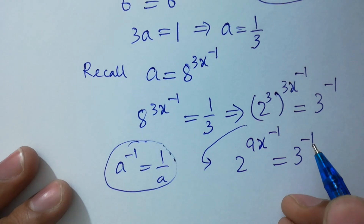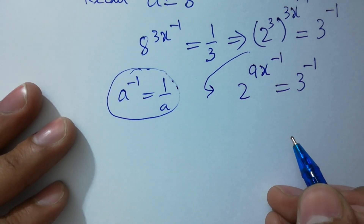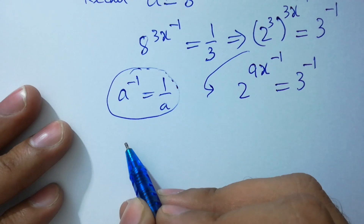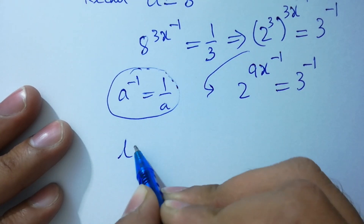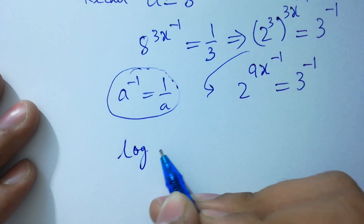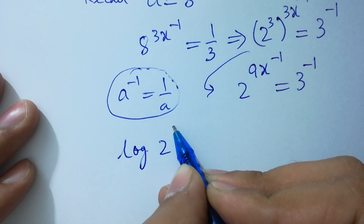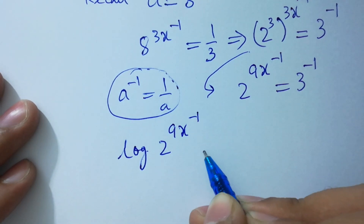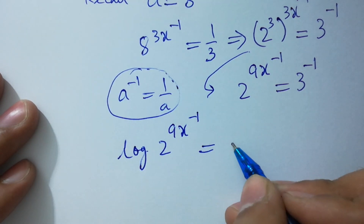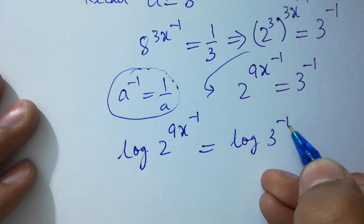Taking log on both sides: log 2 to the power 9x inverse equals log 3 inverse.